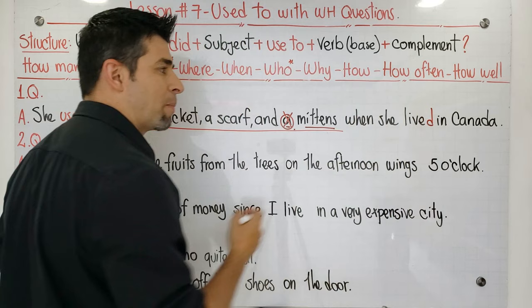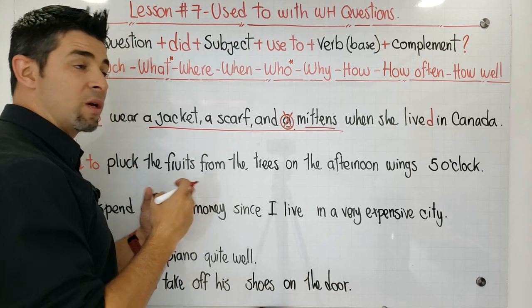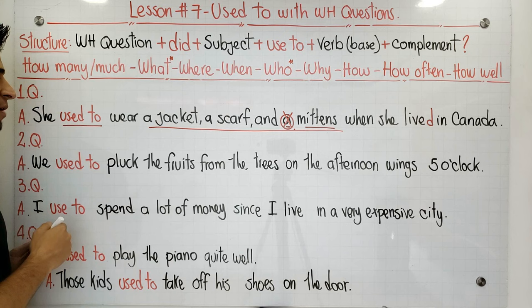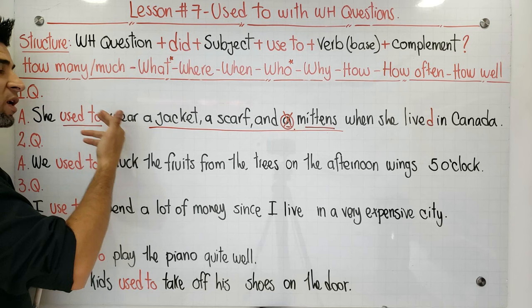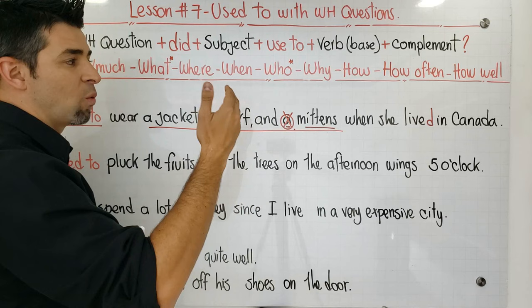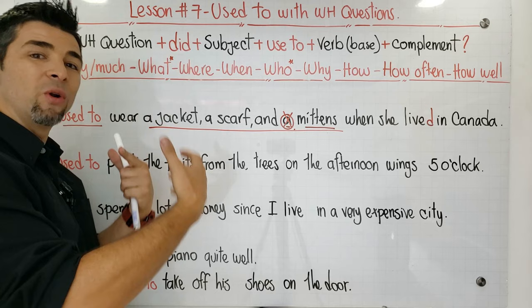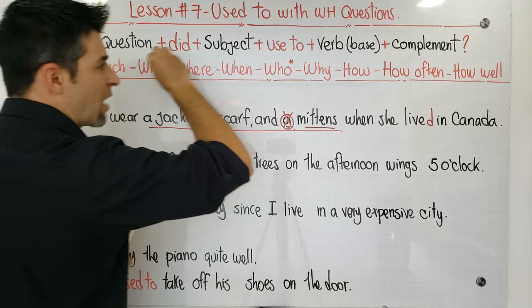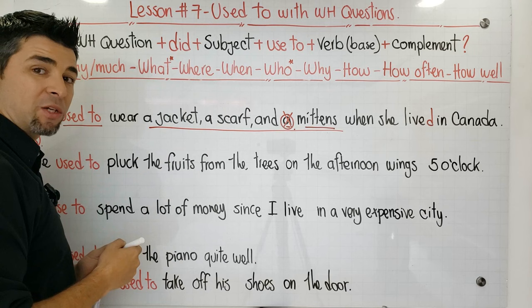Now that the answer is correct, we're going to think about the question. The answer is: she used to wear a jacket, a scarf, and mittens when she lived in Canada. The question will be about what she used to wear. I need to choose one of the WH questions — in this case, 'what' is the option for making the question, though remember that 'what' and 'who' can also make subject questions.